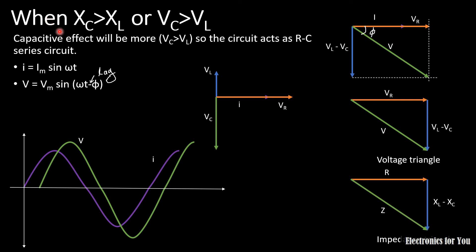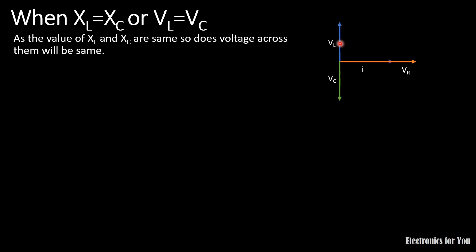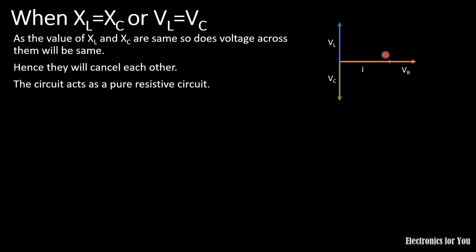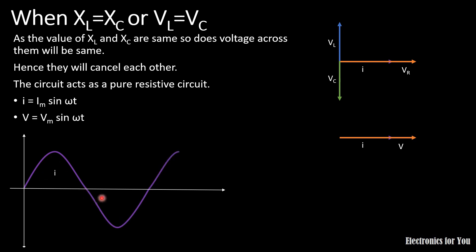The third case is when XL equals XC, meaning the voltage across the inductor and the voltage across the capacitor are equal in magnitude. Since their directions are exactly opposite, they cancel each other: VL − VC = 0. Therefore the circuit becomes purely resistive. In a purely resistive circuit, if i = Im·sin(ωt), the overall voltage equals the voltage across the resistor, V = VR, and there is no phase difference. The voltage equation is simply v = Vm·sin(ωt), and the voltage and current waveforms are in phase.